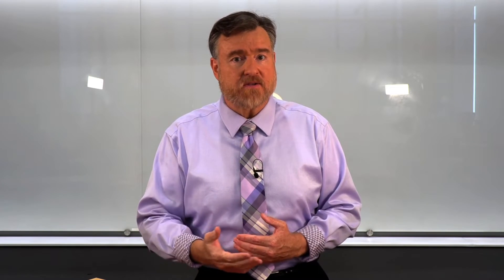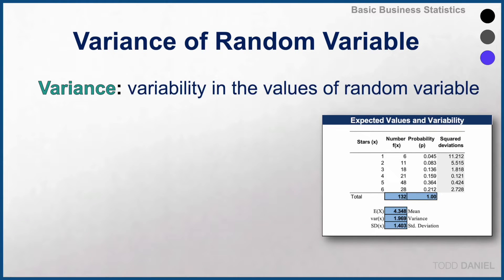With our expected value, we can now compute the variance for our probabilities. The variance is the variability in the values of a random variable. It's answering the question of what is the average variability around the number of stars assigned.